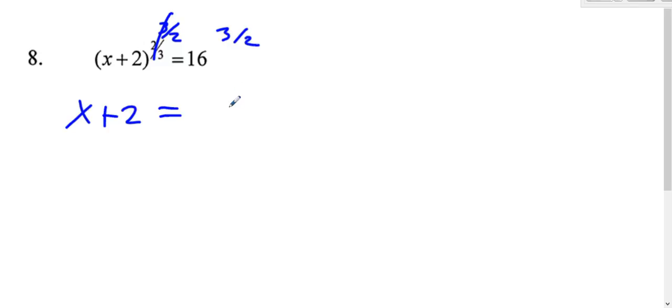16 to the 3 over 2, the denominator is even, so you have to do plus or minus, because that's like a square root. So we'll do the square root of 16, which is 4.